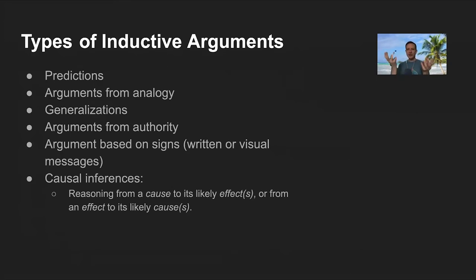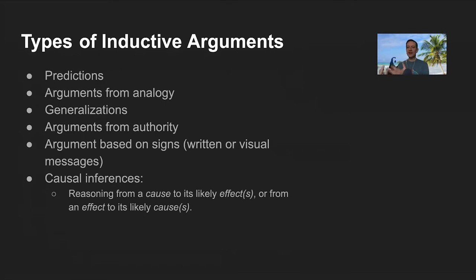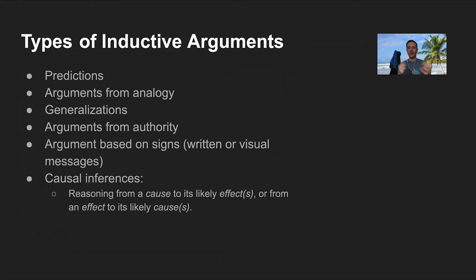Arguments from analogy are inductive because you're comparing two different things. For any two objects, you can always find similarities and differences. When a conclusion hinges on a comparison, even a strong analogy where the two things are similar in relevant ways, there will always be some differences too. Arguments based on analogy can give you good reason for thinking the conclusion is true, but can't prove it with absolute certainty.